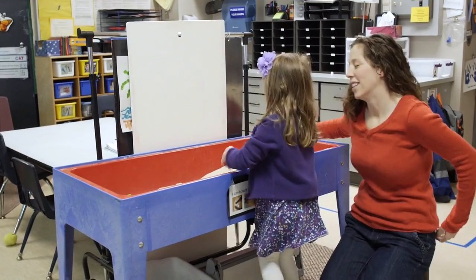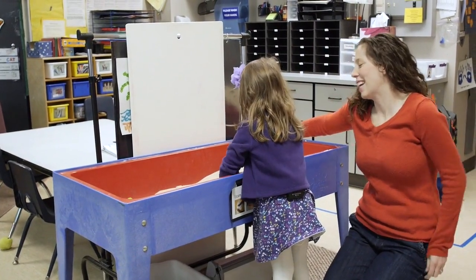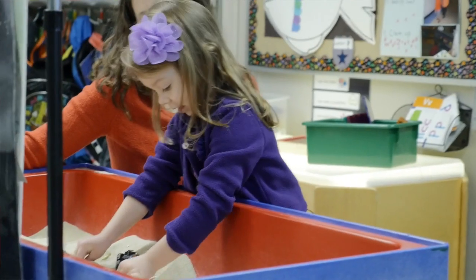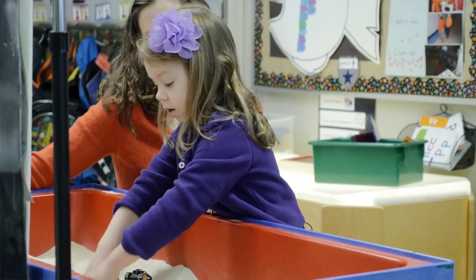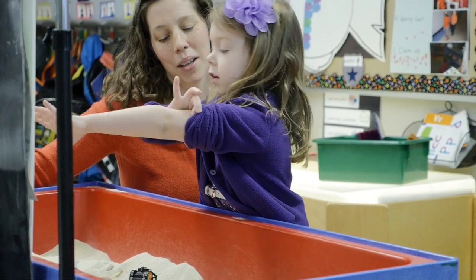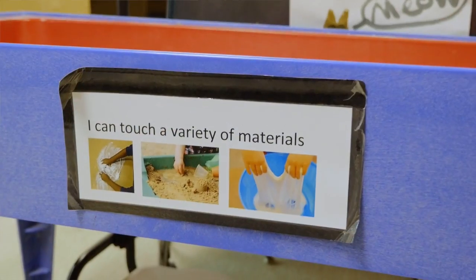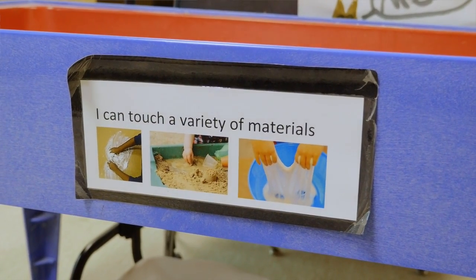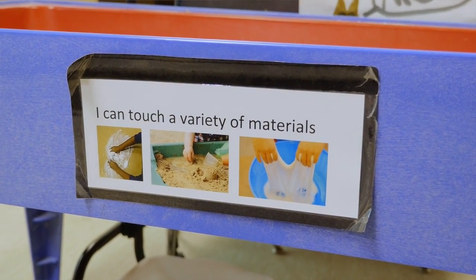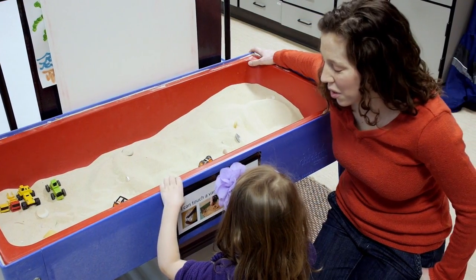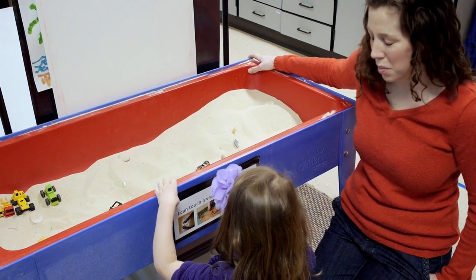This is the sand table. And what can we do here? We can play in the sand. Our learning target in this area is: I can touch a variety of materials. We really just want kids to explore different sensory materials.